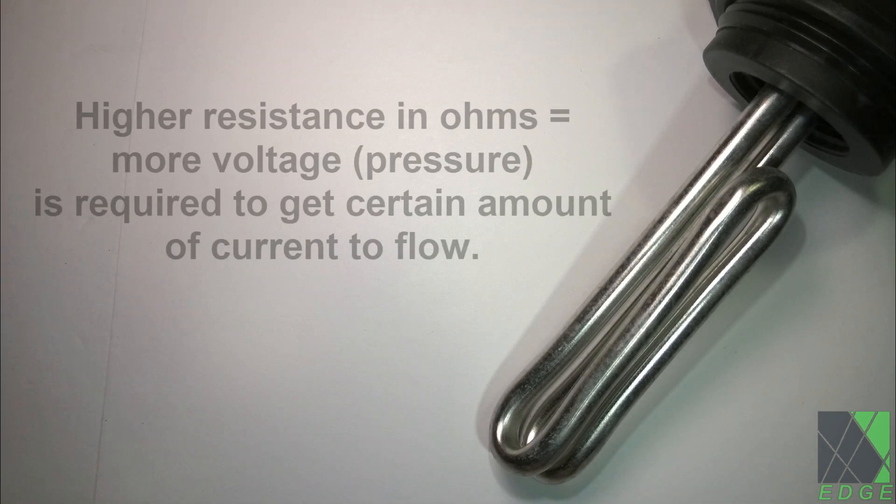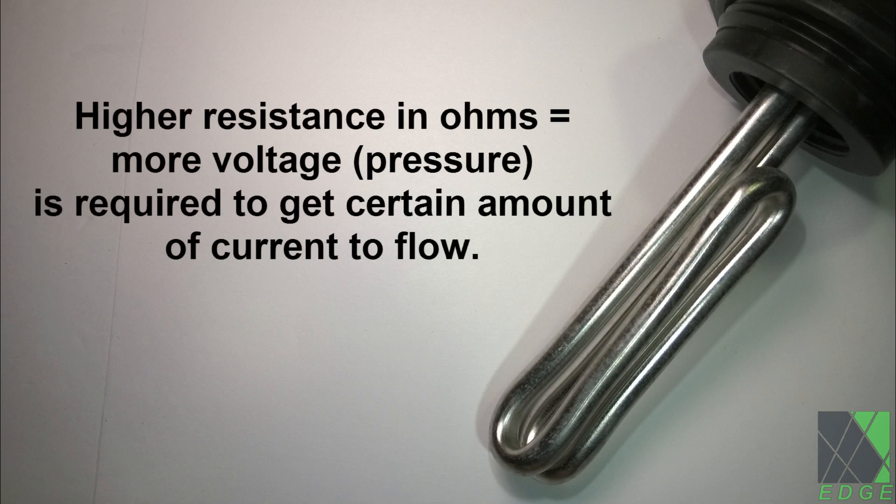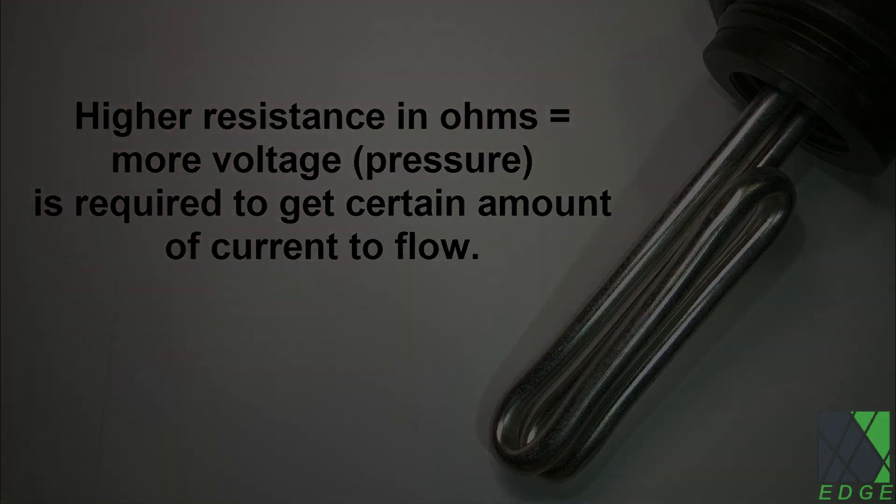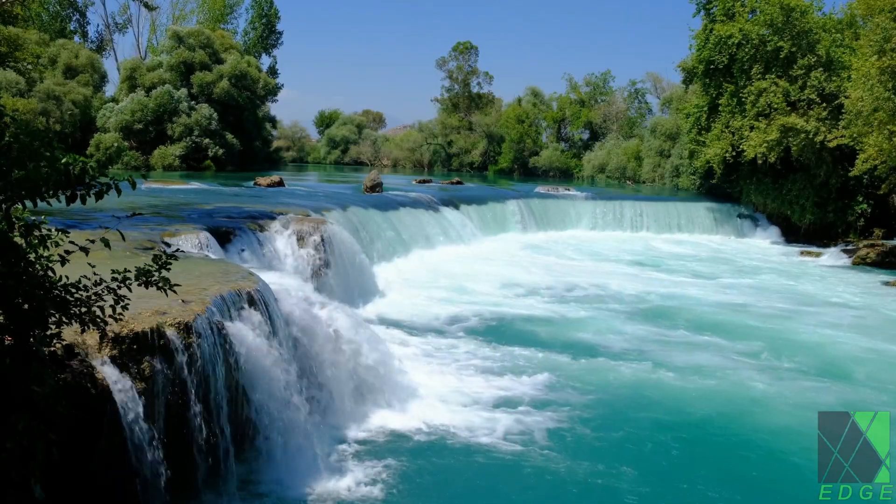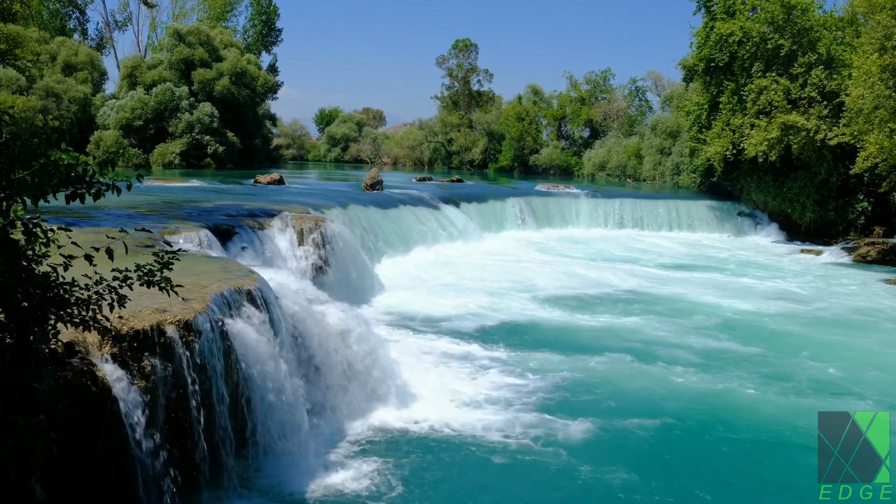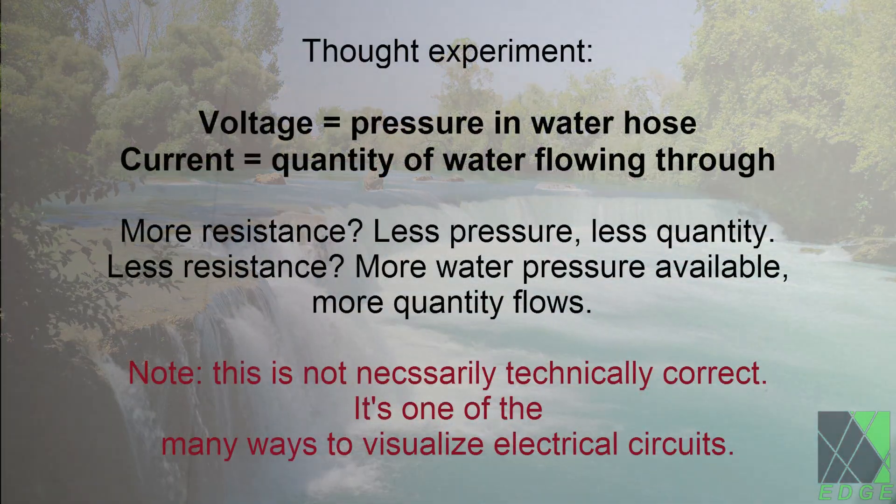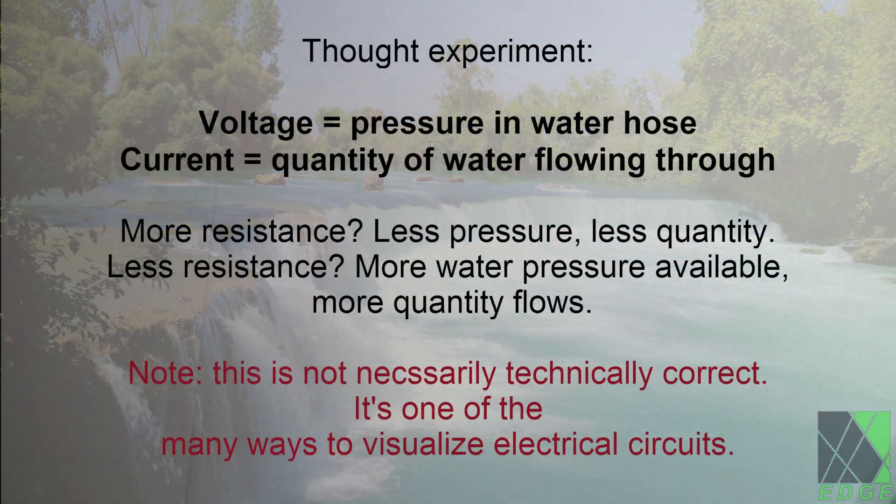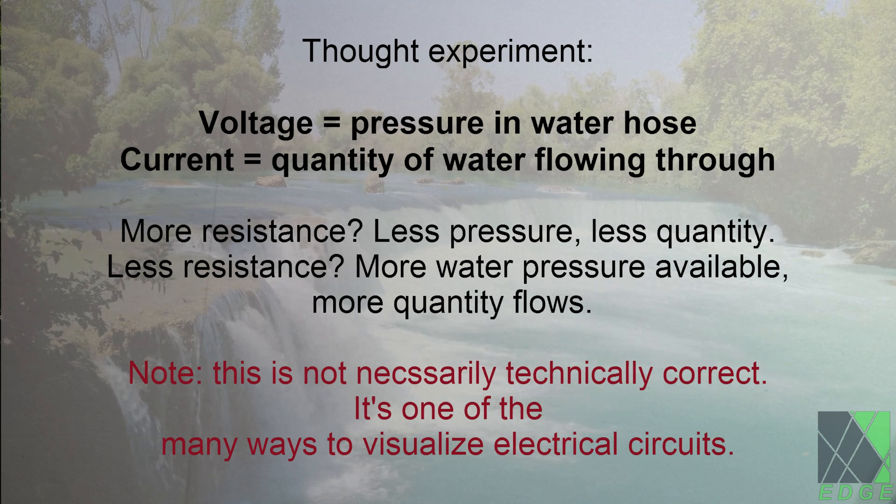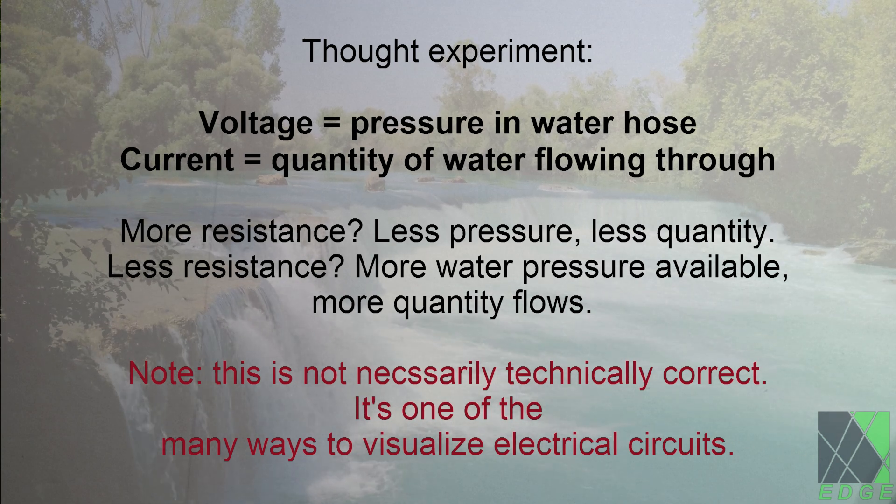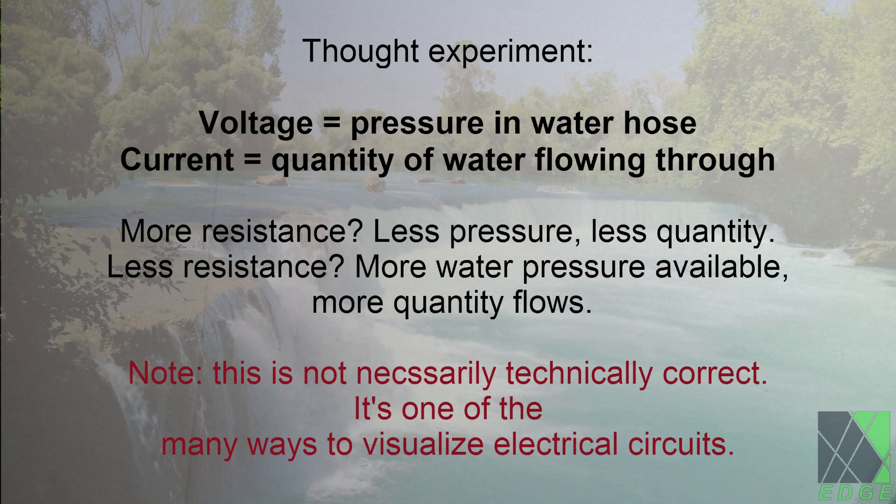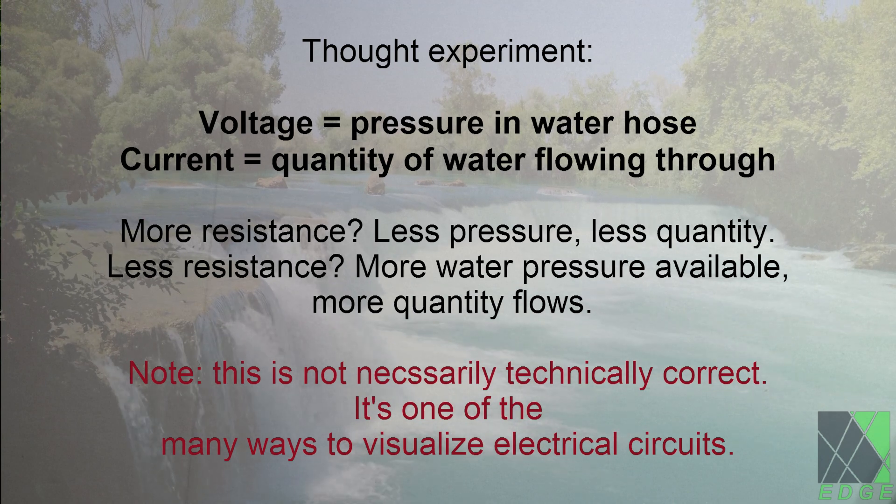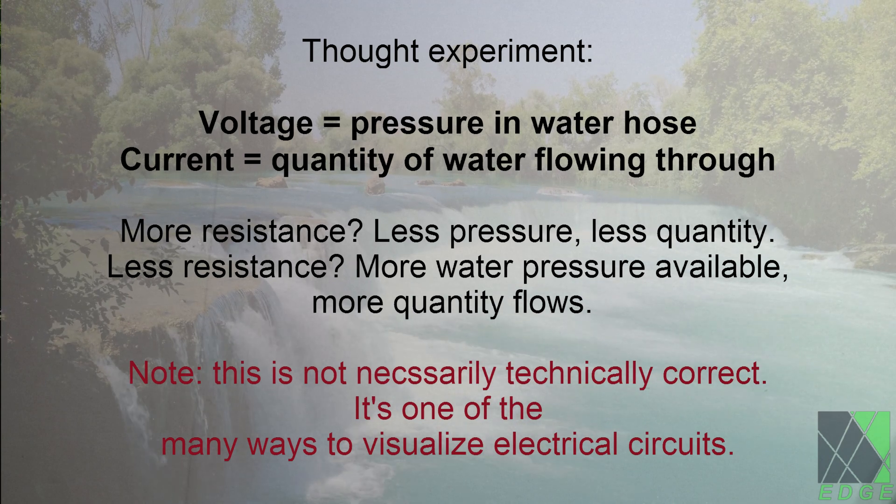Here are some additional points to keep in mind. If the heating element has a higher resistance, it takes more voltage to drive the same current through it. Although it is not necessarily technically correct, I like to think of voltage as pressure in a water hose and current, the quantity of water flowing through the hose. If there's more resistance, you get less pressure and therefore less quantity of water. Again, this is not necessarily technically correct, but it may help you visualize what's going on in the circuit.